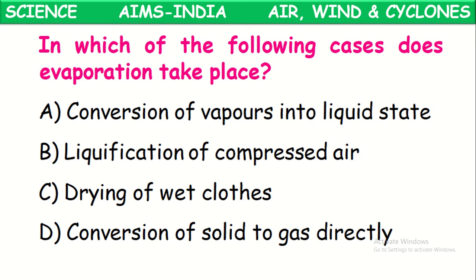In which of the following cases does evaporation take place? Conversion of vapor into liquid is not evaporation — that is condensation. Liquefaction of compressed air is also condensation. Drying of wet clothes — yes, evaporation takes place here. The water in the clothes converts into vapor and enters the atmospheric air, so the clothes become dry. Conversion of solid into gas is called sublimation, not evaporation. So the correct answer is drying of wet clothes.